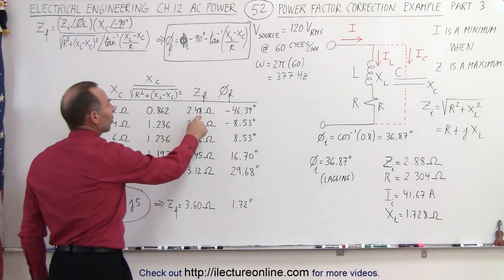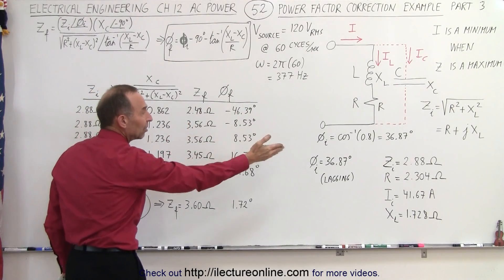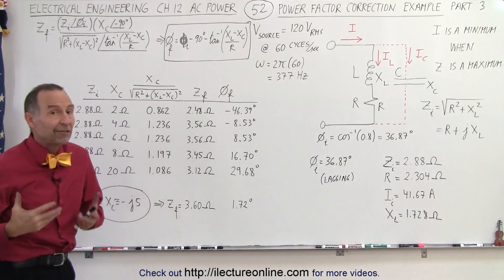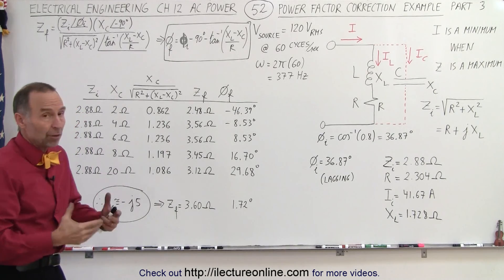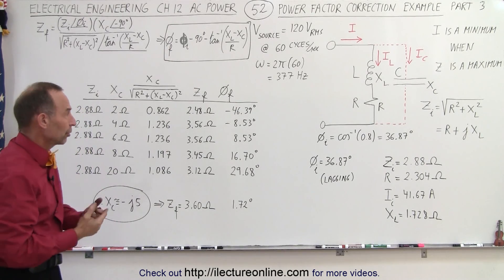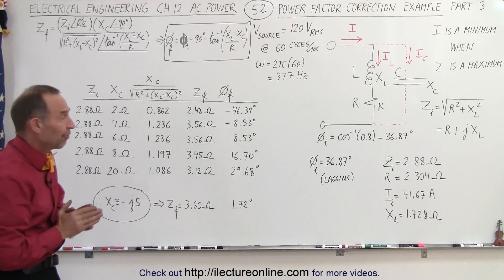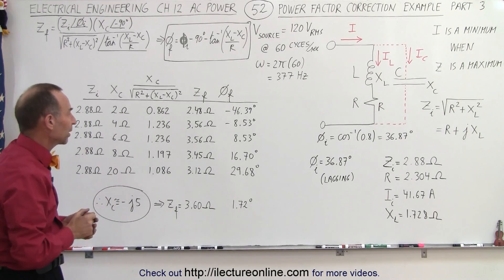We remember from the previous video that we end up with an impedance that was smaller than the impedance we had initially, and therefore it was not the right value to use because a smaller impedance would require even more current. That means we had a smaller power factor.